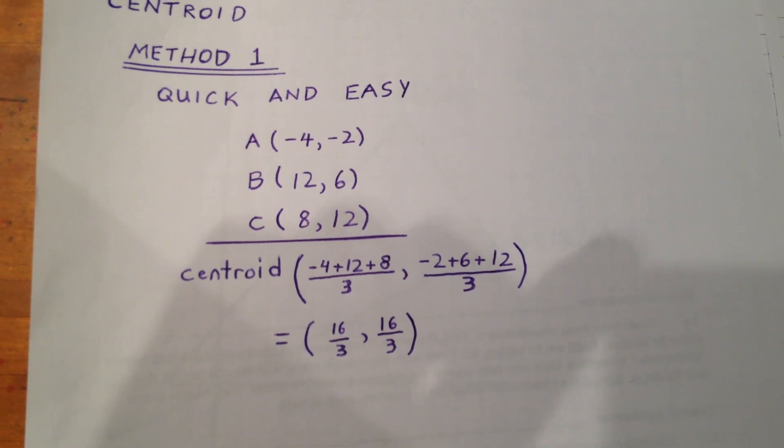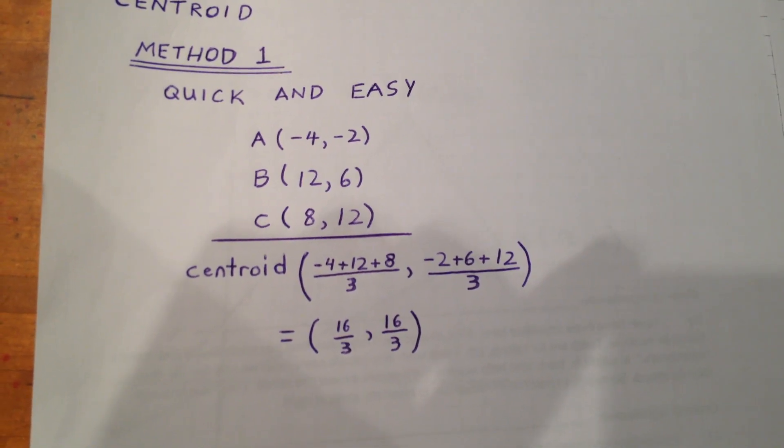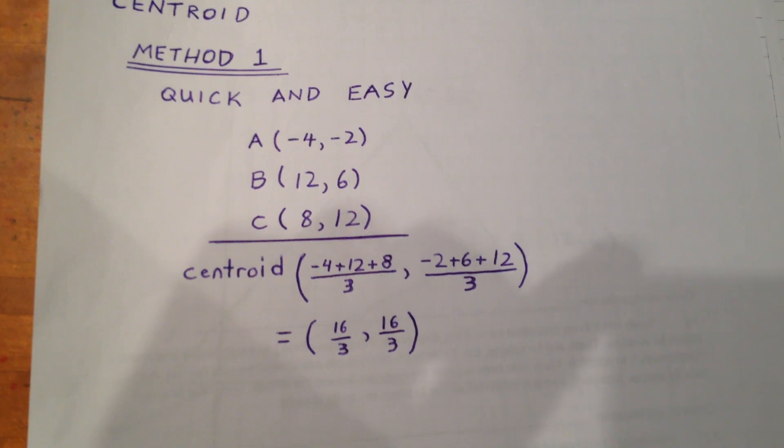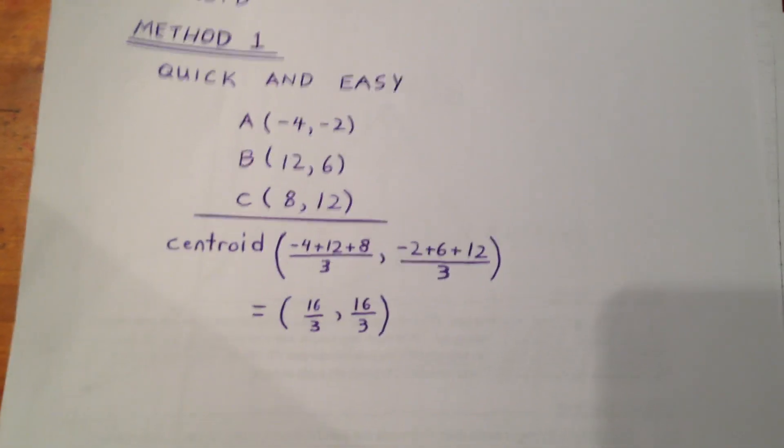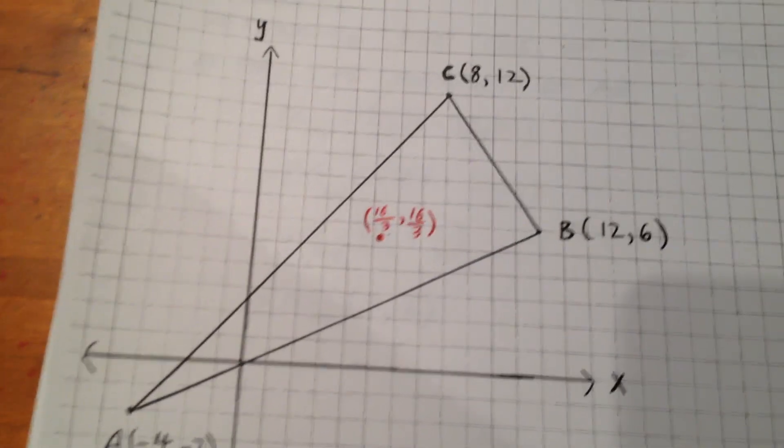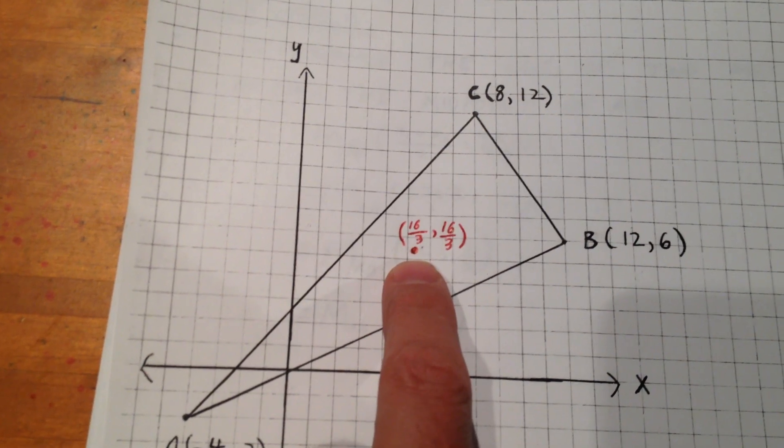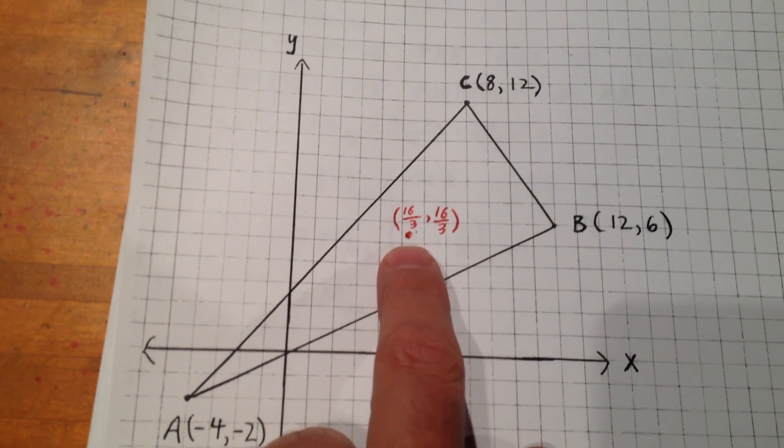Of course, it doesn't always work out that the x and y coordinates of the centroid are the same, but in this case it does. And there's our centroid. Given the triangle that we were given at the start, our centroid is right there.